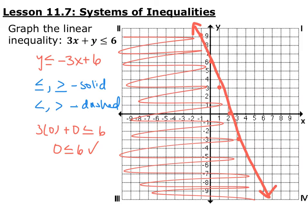So if you plug in 0, 0, you get 3 times 0 plus 0 is less than or equal to 6. 0 is in fact less than or equal to 6, so it's a solution to our system. So we want to include it in our shading, so I'm going to shade that side of the line.